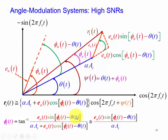So it's just opposite side, which is en sine of phi minus theta of t, divided by the adjacent side. So it's the opposite over the adjacent. So here's our opposite, here's our angle, our error angle, divided by our adjacent side, which consists of alpha Ac and this component along Ac, en cosine of phi n minus theta of t.